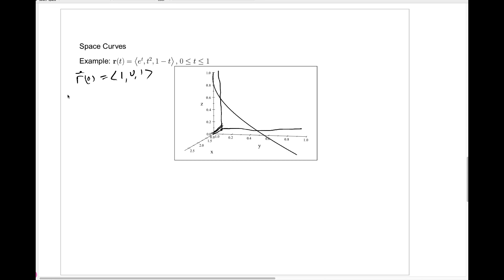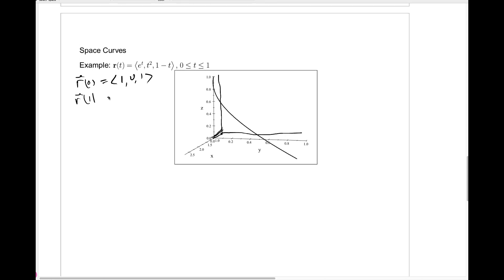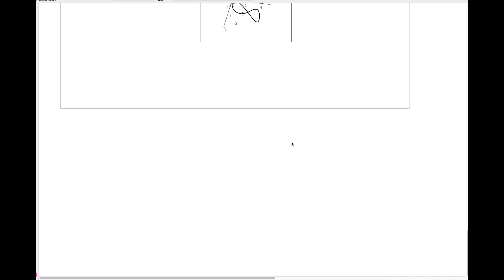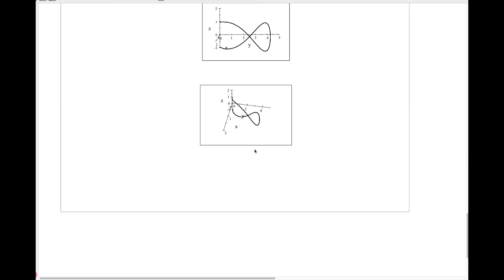And then as t increases to 1, we have r of 1 is the vector e, 1, 0, which is way over here. And you can see this vector function represents motion along this curve from this initial point here to this end point.